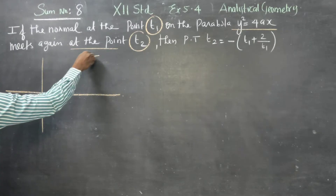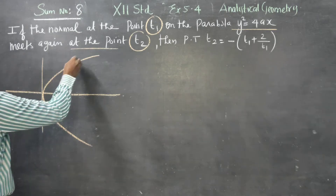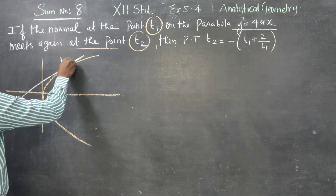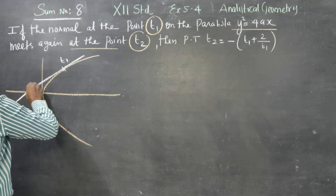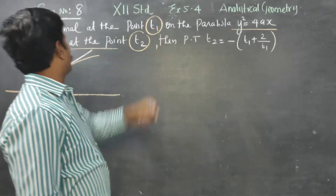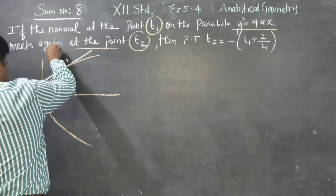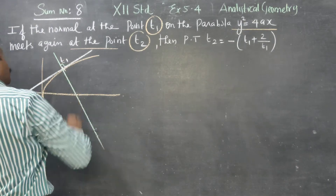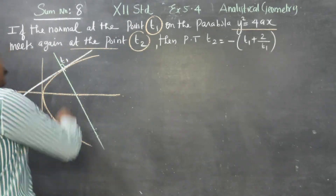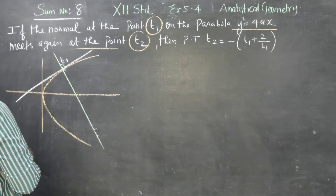Consider this parabola. Let the white line be the tangent at T1. I want a normal — that is, a perpendicular — at T1. The normal at T1.